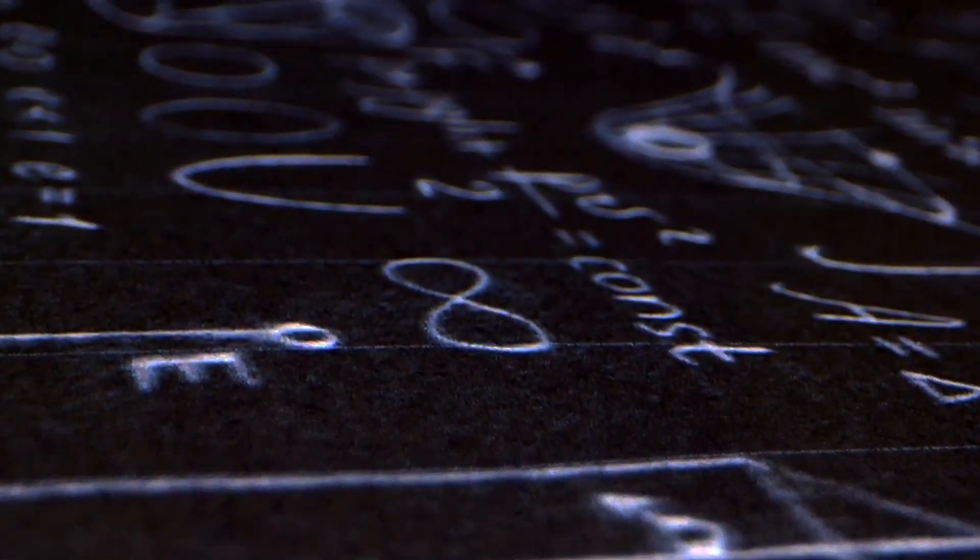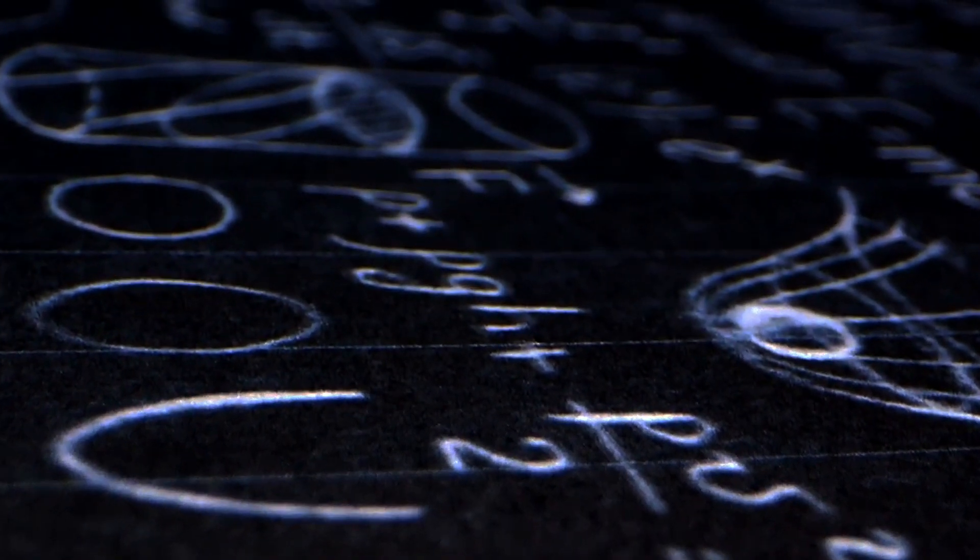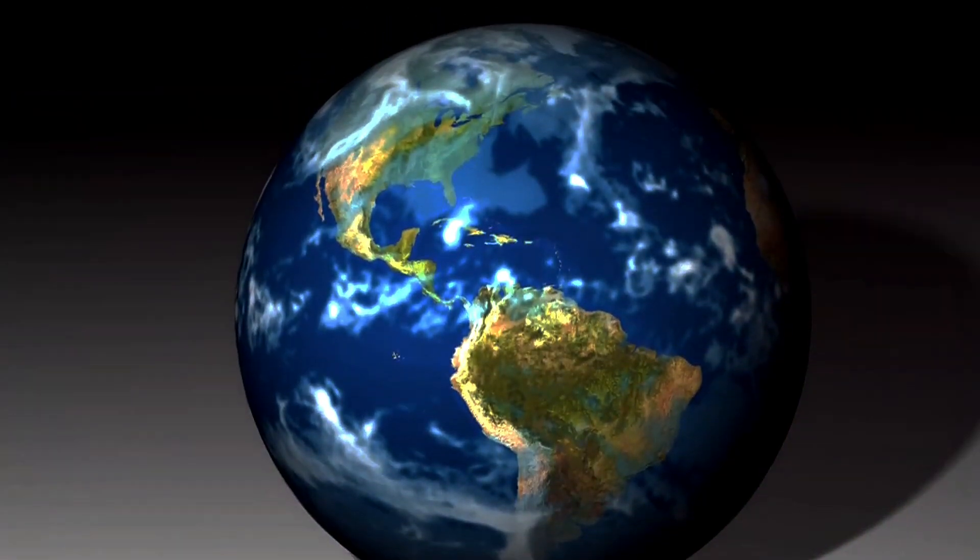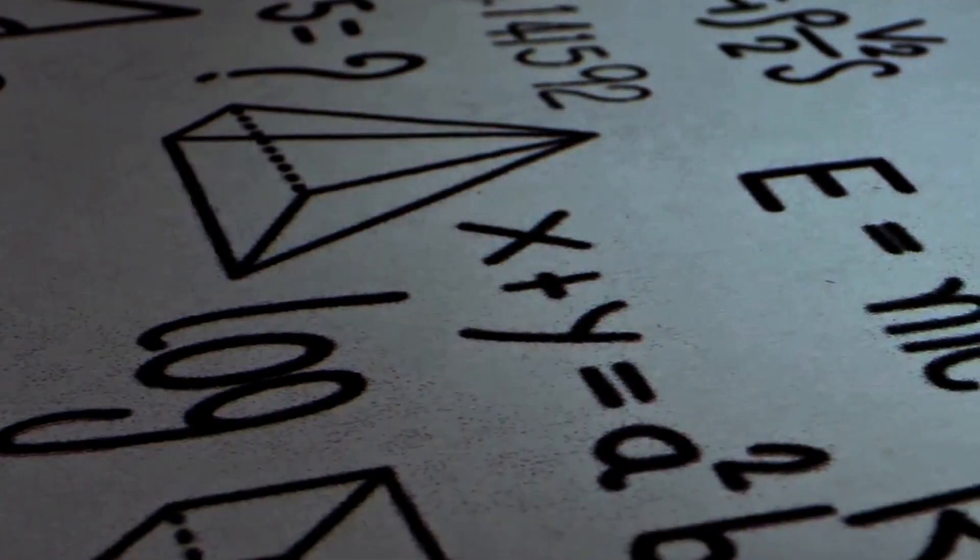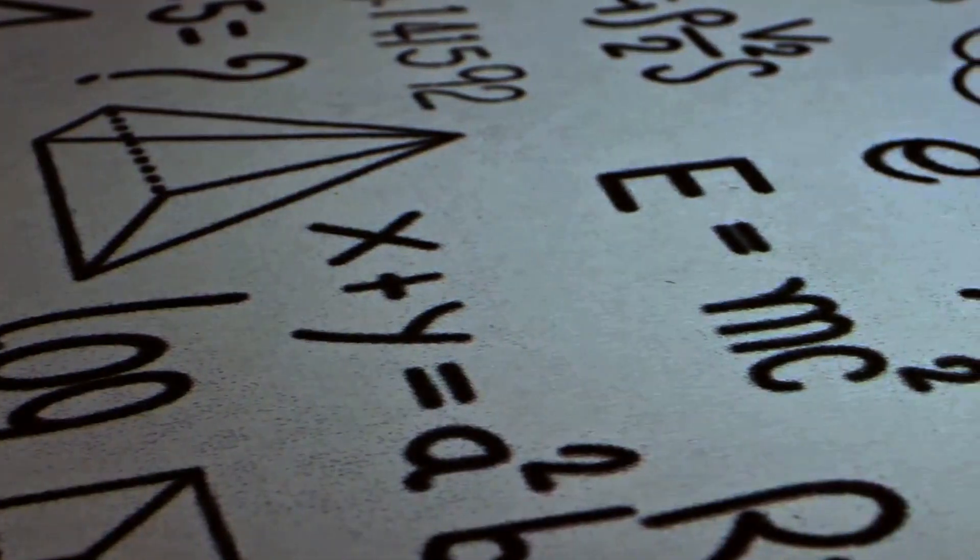we would note that in the Newtonian theory of gravity, there are also conjugate variables present, gravitational potential and mass density. If the analogy with electromagnetism, between electric potential and free electric charge holds, which we expect it to, that means we can extract an uncertainty relation for gravity as well.